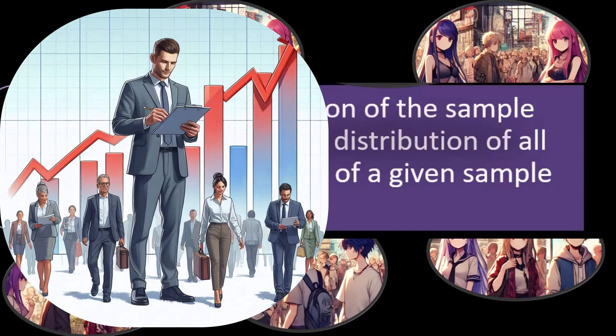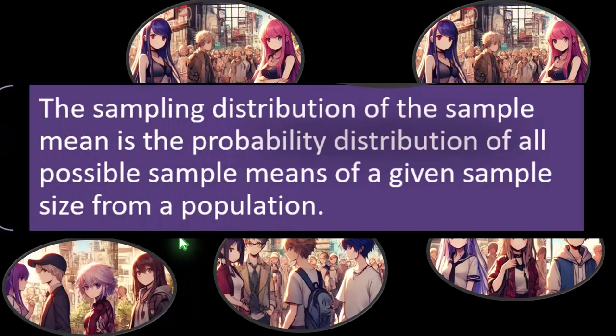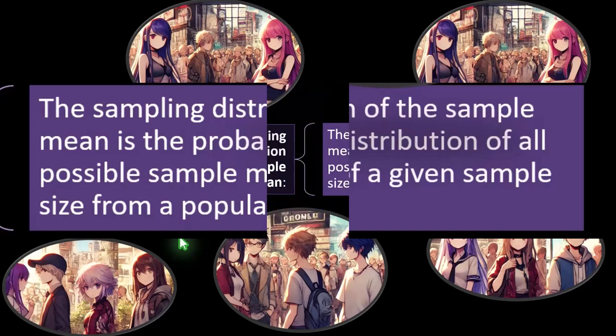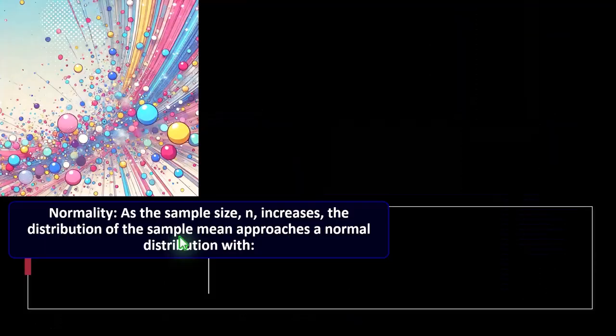So, key component here — which we'll see a lot more in practice problems — sampling distribution of the sample mean: the probability distribution of all possible sample means of a given sample size from a population.